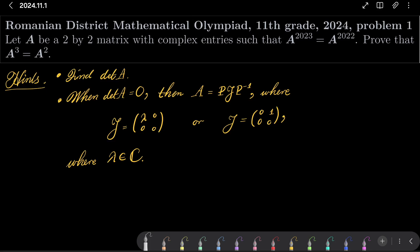It's not a particularly difficult problem, here are my hints. First, find the determinant of A and you should consider two cases. In one case, when the determinant is not zero, well then our matrix is invertible, so the problem is done almost.